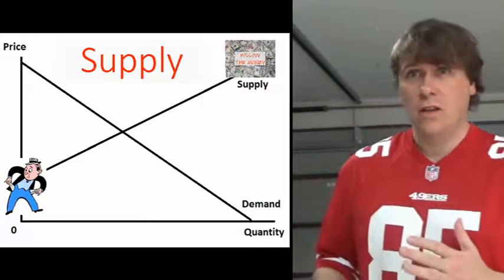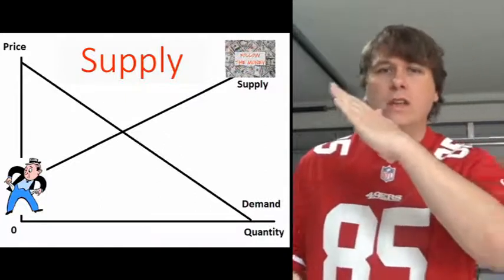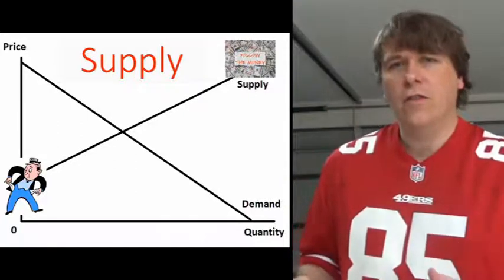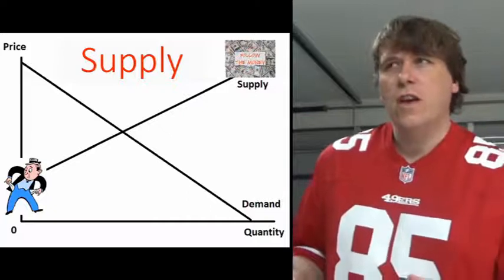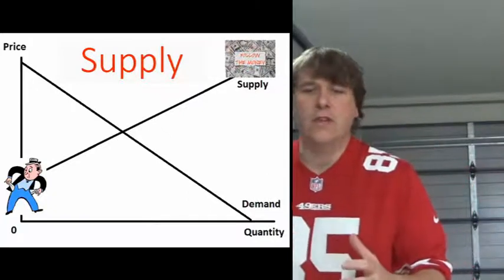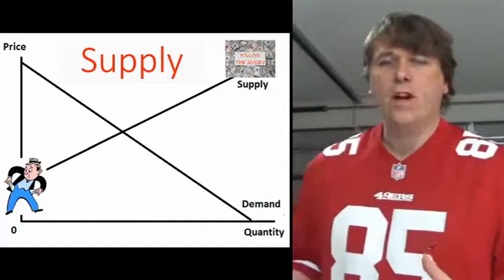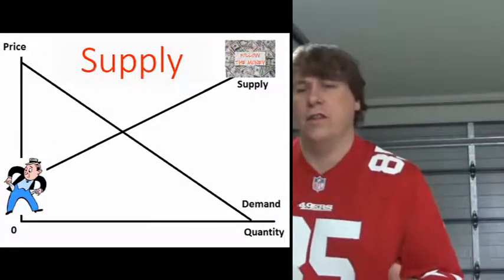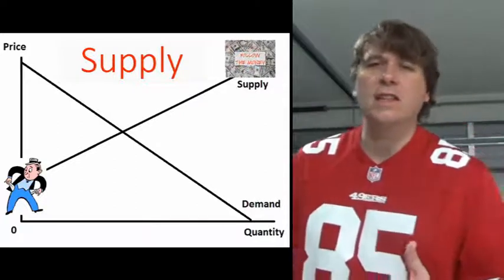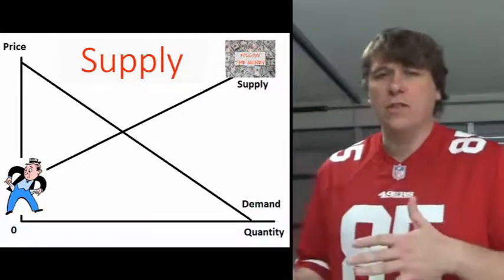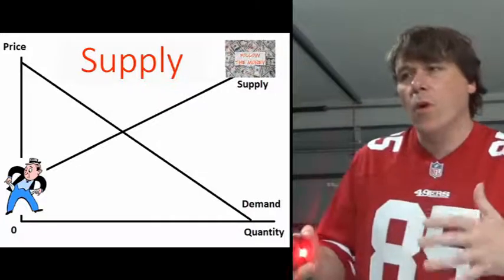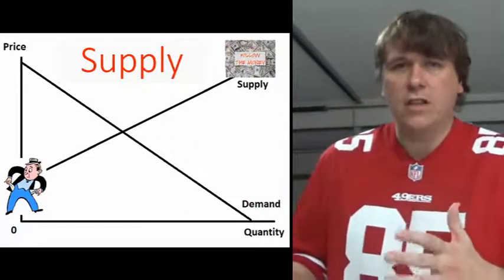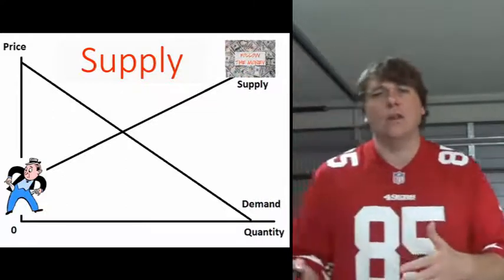Supply tends to be the opposite of demand — it's upward sloping. That's simply because the higher the price, the more sellers are willing to sell. For example, if the minimum cost something can be produced is two dollars and the price is below that, you won't get anyone selling it because they'd be making a loss. As the price goes up, more and more sellers are willing to sell more of that item, more producers enter the market, and profits tend to go up as well.